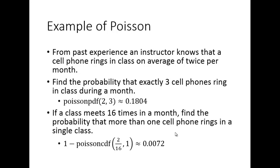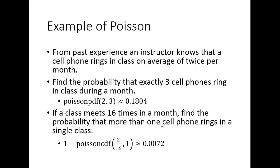This example has a caveat: Poisson requires independence between events. If one cell phone goes off, students likely check their phones and silence them, making a second ring less probable — so the true probability might be slightly lower. But it gives us a reasonable approximation. That's where we'll end this video.